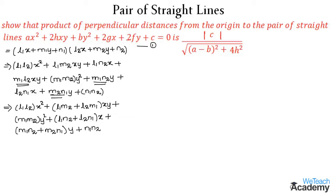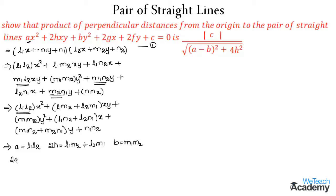Now let us compare equation 1 with this expanded equation. The coefficient of x² is a, so a = l₁l₂. We get 2h = l₁m₂ + l₂m₁, b = m₁m₂, 2g = l₁n₂ + l₂n₁, 2f = m₁n₂ + m₂n₁, and the constant c = n₁n₂.